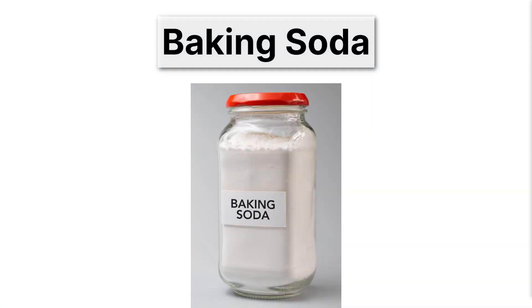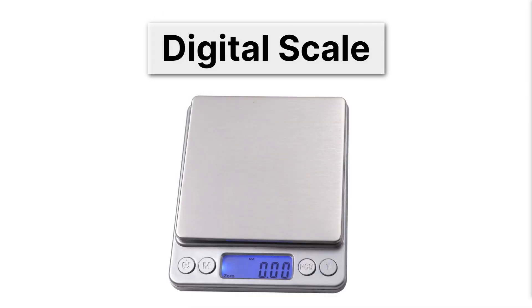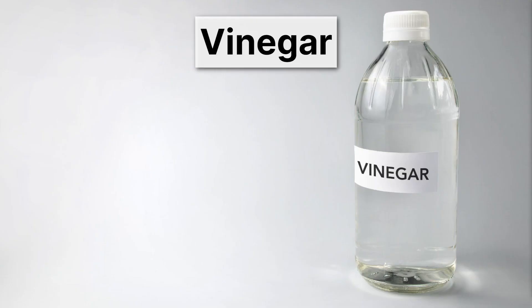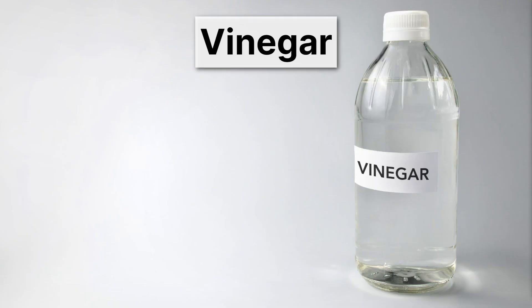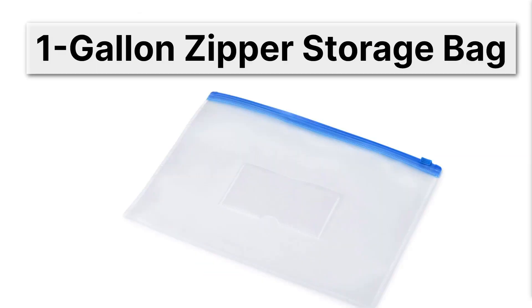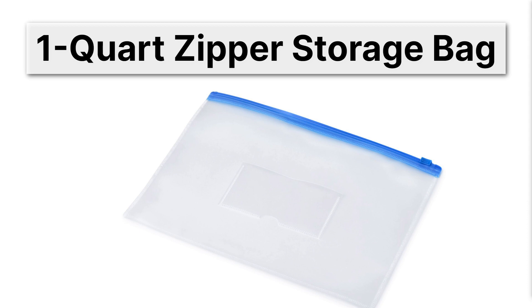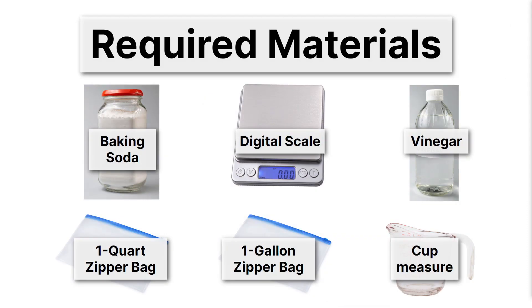Let's start with the required materials. We're going to carefully weigh out a given amount of baking soda and combine that with vinegar. To measure the vinegar, we'll use a cup measure, and these things will be combined in either a one-gallon or a one-quart zipper storage bag. Feel free to pause the video, go collect all of those materials, and then come back and finish the lesson.